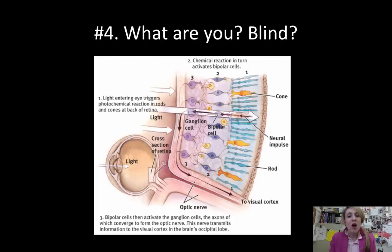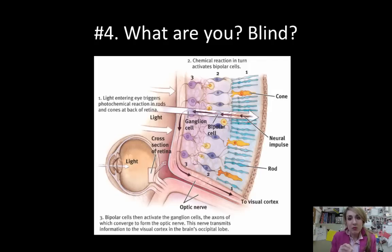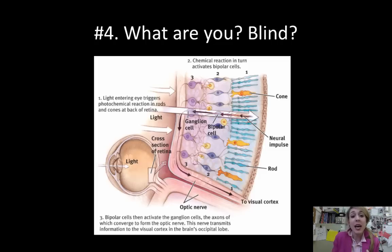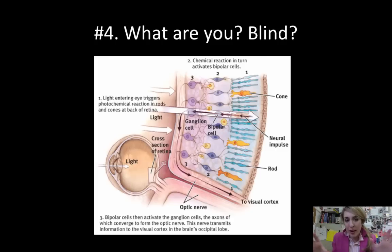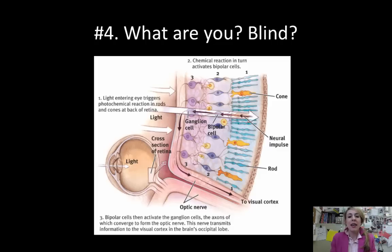Inside the retina are the rods and cones. Cones are for color and they're in the center — C, color, center. The rods are in the periphery and are good in dim light; in bright light, cones work just fine. Those rods and cones are attached to bipolar cells, which are then attached to ganglion cells. The ganglion cells make the axons of the optic nerve, and when the optic nerve leaves the eye, you have a blind spot — there's no retina there. The fovea is where vision is clearest; it has the most cones and gives you the best visual acuity.